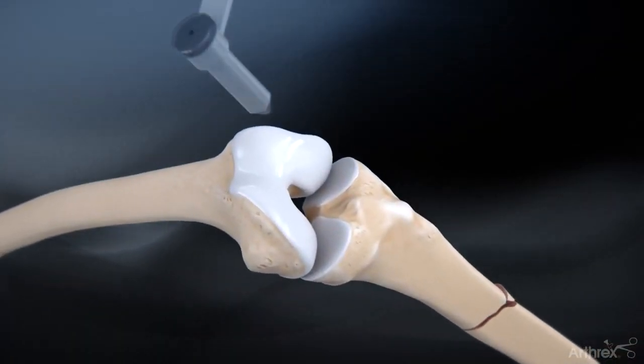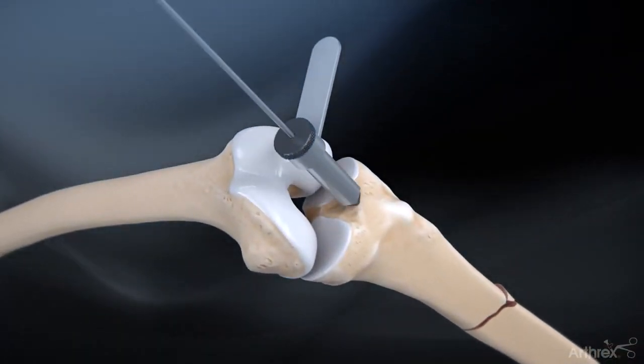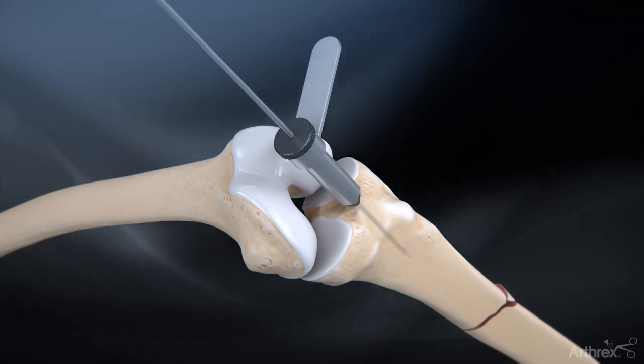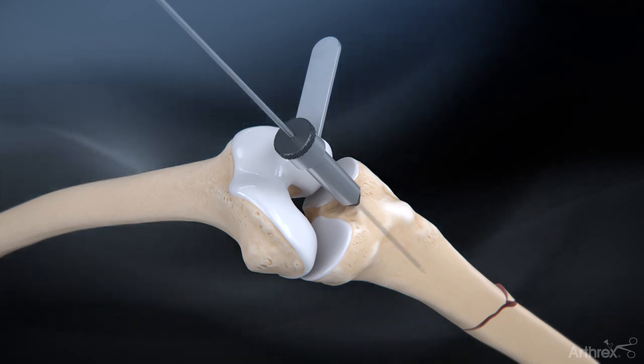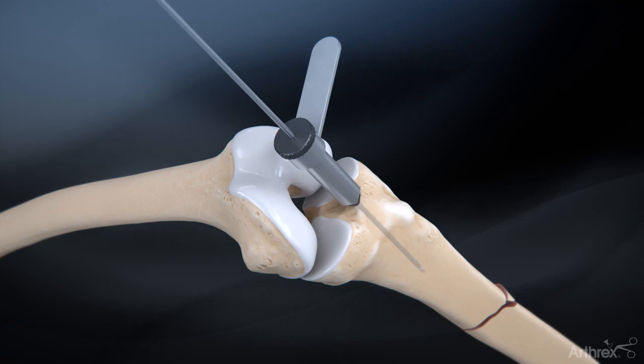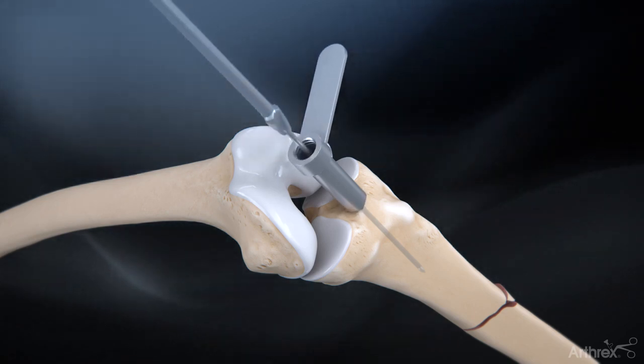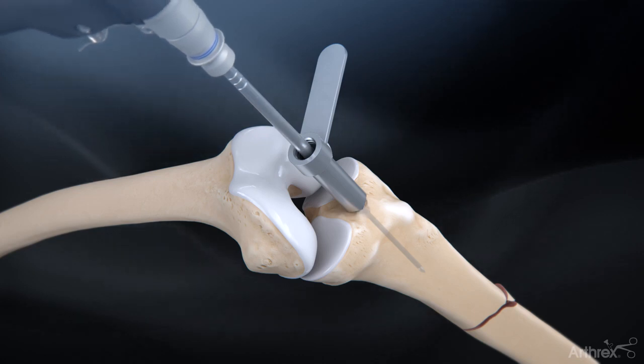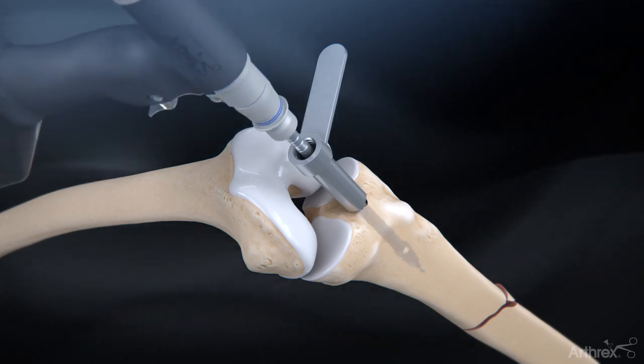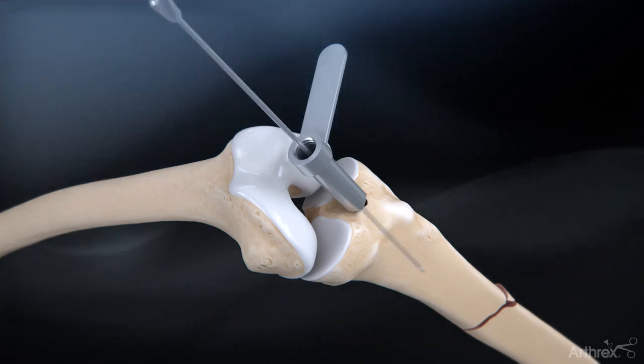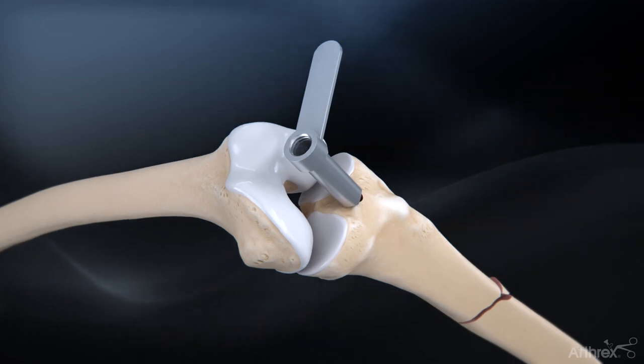Orient the entry tube and pin guide in the desired position. Insert the 3.2 mm guide pin into the proximal tibia so that it reaches the center of the intramedullary canal. Remove the inner pin sleeve and use the 12.0 mm reamer to open the canal. Remove the 3.2 mm guide pin.